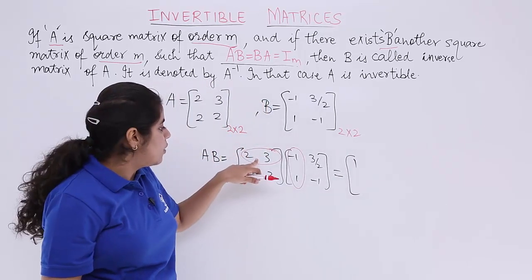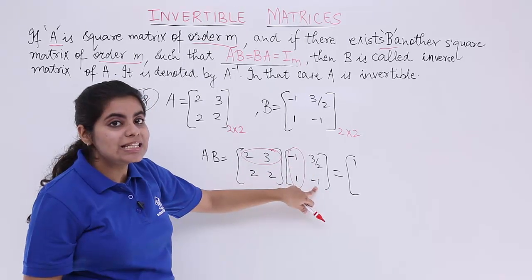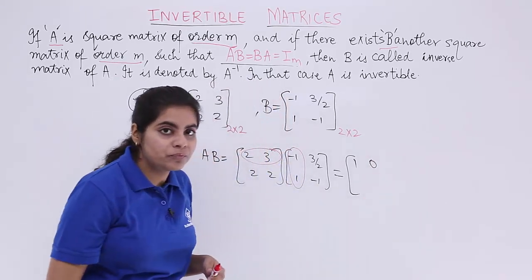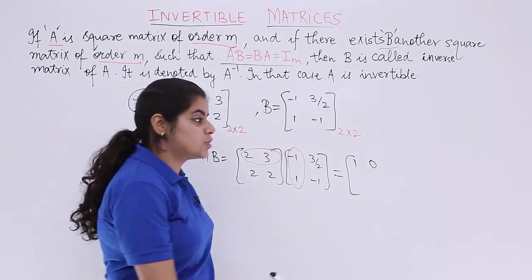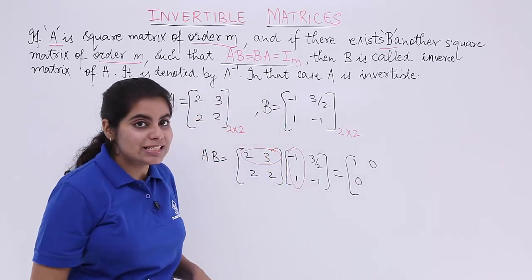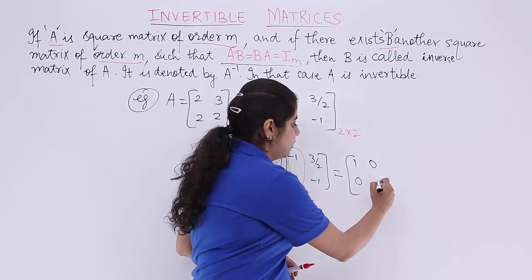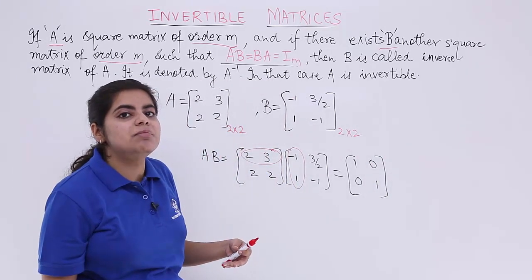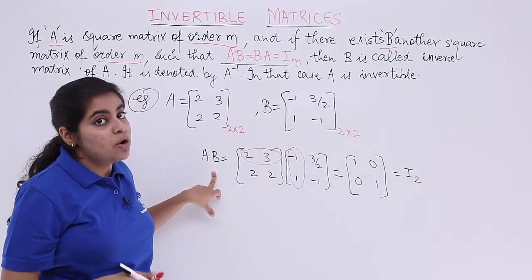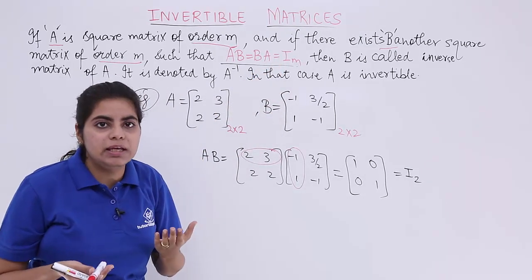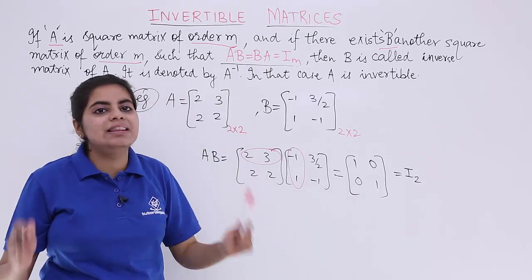Now, first row and second column, 2 into 3 by 2 is 3, 3 into minus 1 is minus 3. So 3 minus 3 is 0. Simple multiplication, you know how to do it. 2 into minus 1 is minus 2, 2 into 1 is 2, minus 2 plus 2 is 0. Last but not the least, I have 2 into 3 by 2 is 3, 2 into minus 1 is minus 2, 3 minus 2 is 1. You see what is the result? The result is basically an identity matrix. So I write it as IM which is I2. But this is the result of AB. What about finding BA?